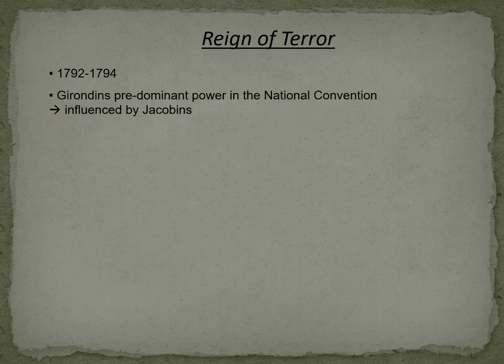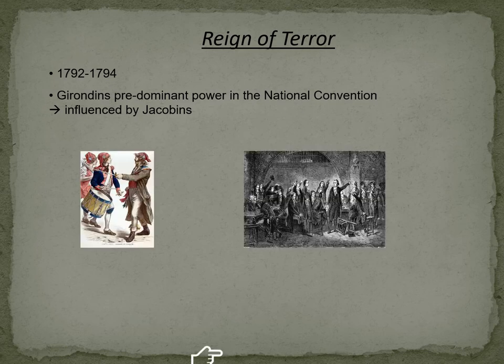The Reign of Terror describes the time between 1792 and 1794. The Girondins were the predominant power in the National Convention, influenced by the radical Jacobins, who cooperated with the Parisian Commune.